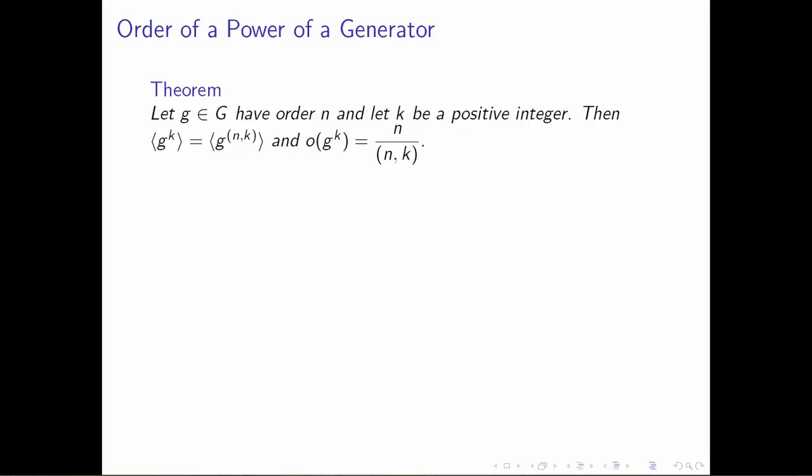Let's take a group element g in some larger group. Let's assume that the order of g is n, which means that the group generated by g has n things in it. What this theorem is going to help us do is take any positive integer k and figure out how many things belong to the group generated by g to the k.